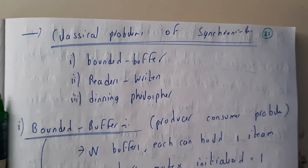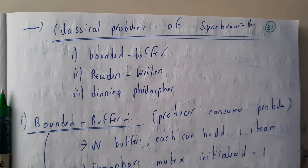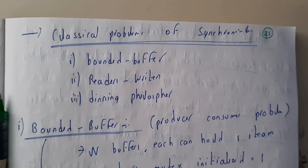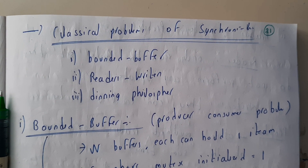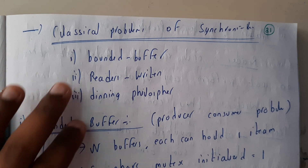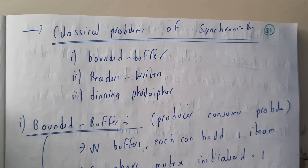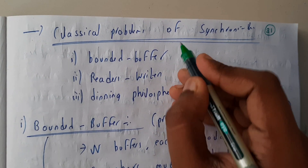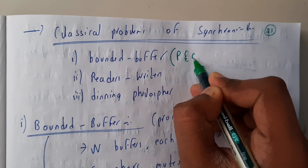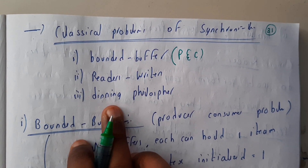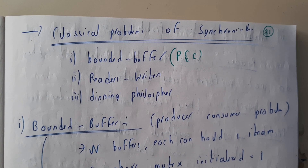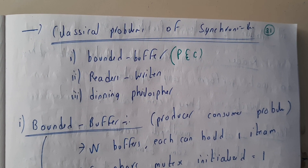Hello guys, we are back with our next tutorial. In this tutorial, let us go through the classical problems of synchronization, which we will be solving using semaphores and related concepts. There are three problems: bounded buffer, which is popularly called the producer-consumer problem, readers-writers problem, and dining philosopher problem. In this lecture we will just go through the introduction of these problems.